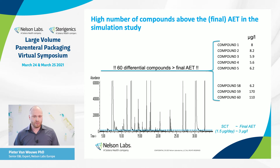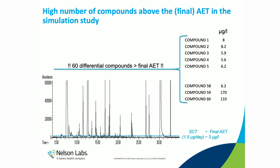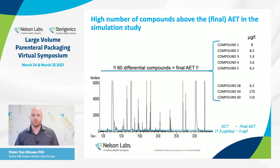Looking at a case study: this is a GC-MS chromatogram from a simulation study on a large-volume parenteral bag system, and we had 60 compounds present above the final AET level. If we need to monitor 60 compounds in a leachable study, that would be very hard from a practical point of view — it will cost a lot of time and would not be cost-effective for our customers. Therefore, we have an alternative approach.